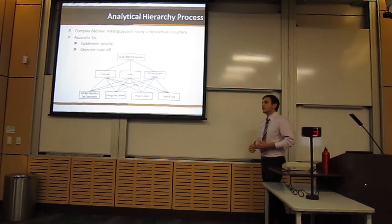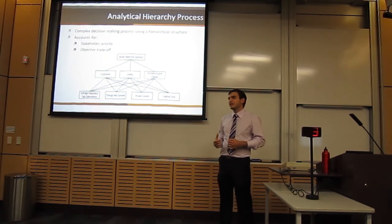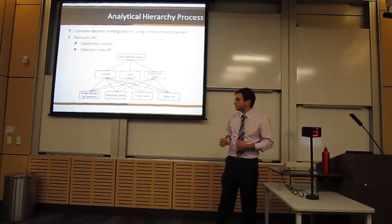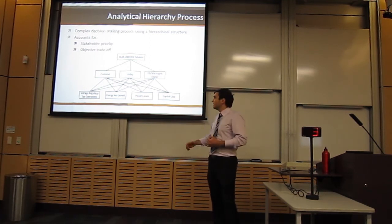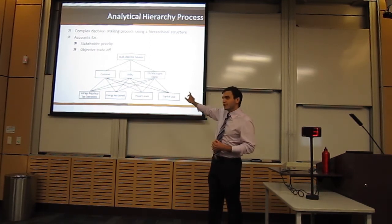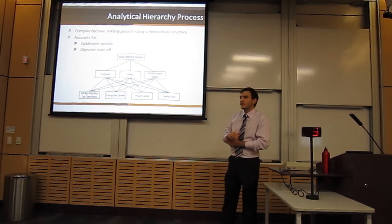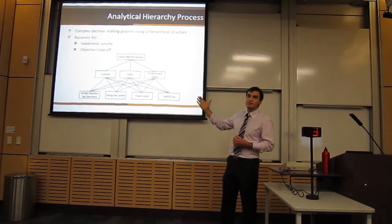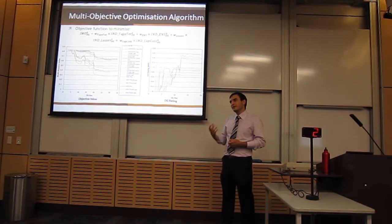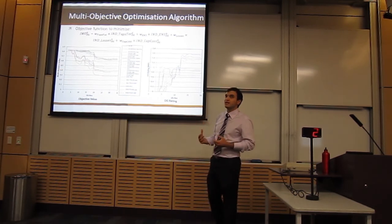To determine objective weightings for the multi-objective optimization algorithm, the analytical hierarchy process (AHP) was used. AHP is a complex decision-making process with a hierarchical structure. It takes into account the relative stakeholders in the decision-making process — for this thesis, the customer, utility, and DG market owner — and their relative importance. For example, the utility might have the greatest decision-making weight, but if the cost to implement DG outweighs the advantages, the most viable solution may actually be to not implement DG at all.